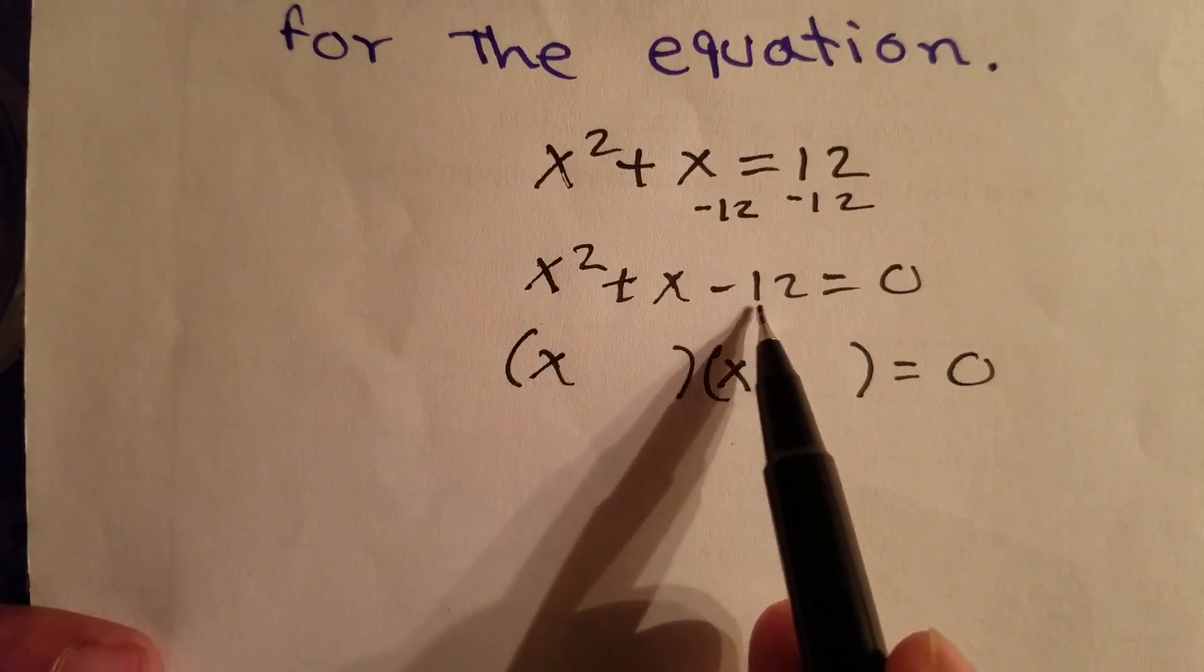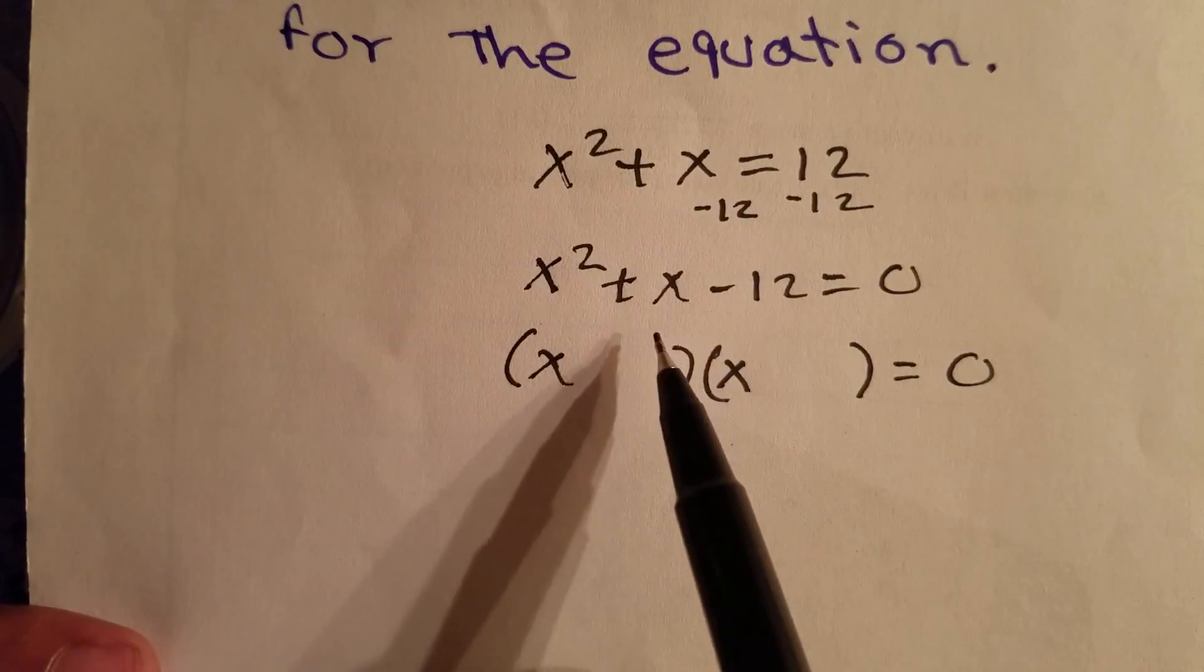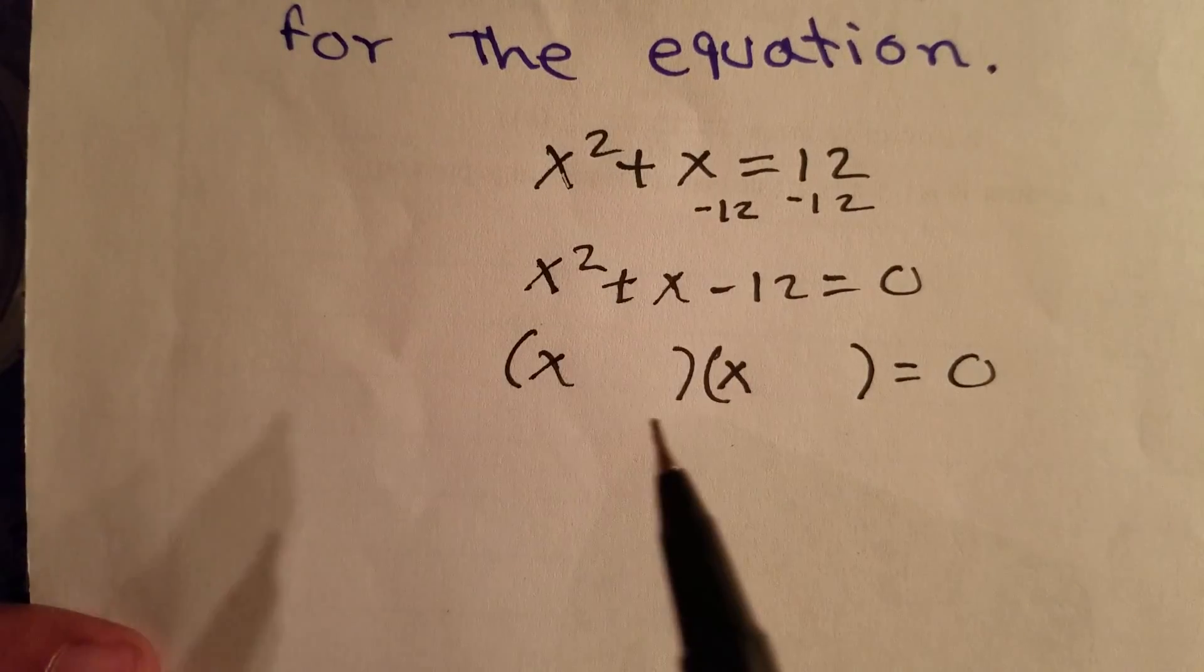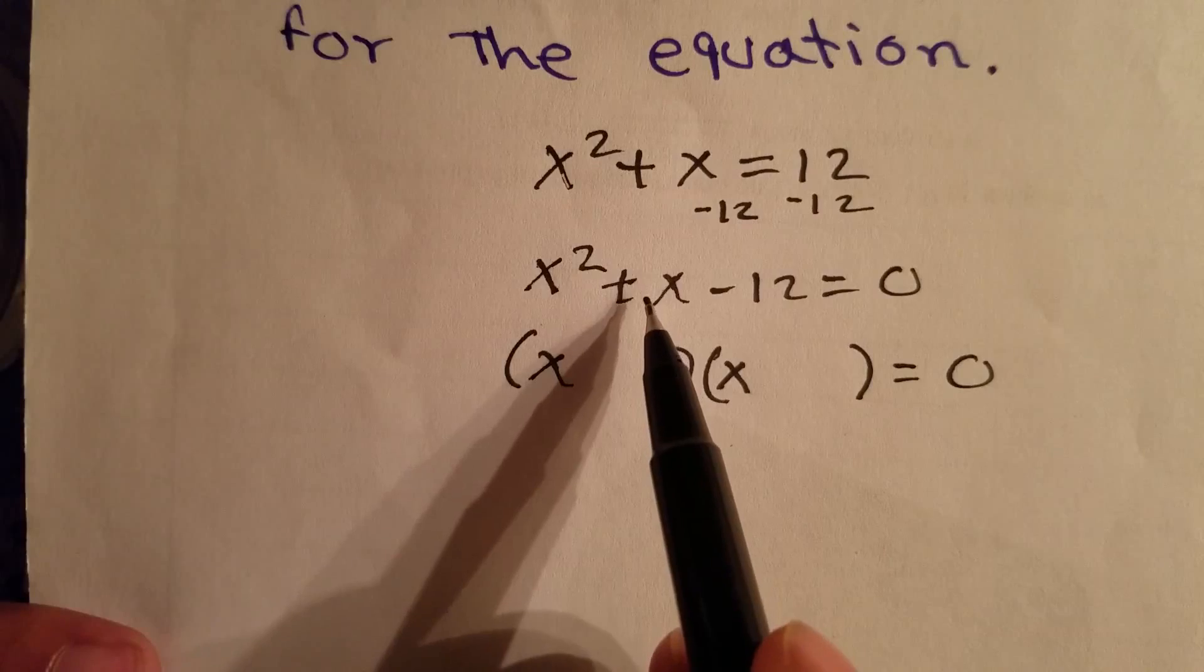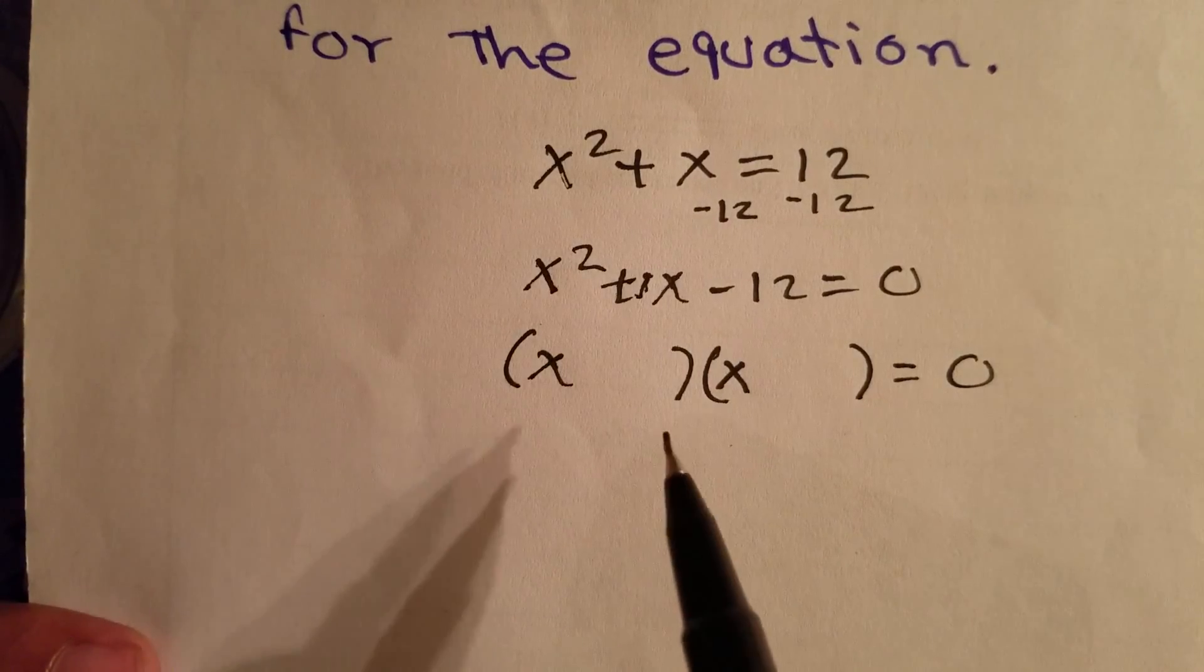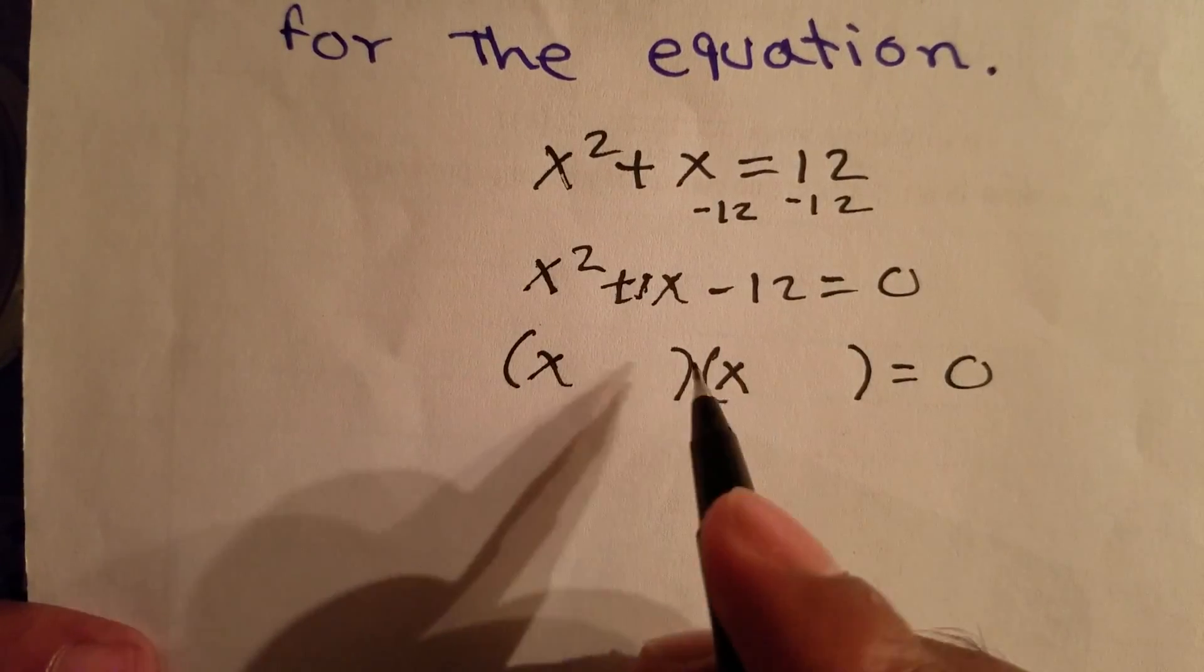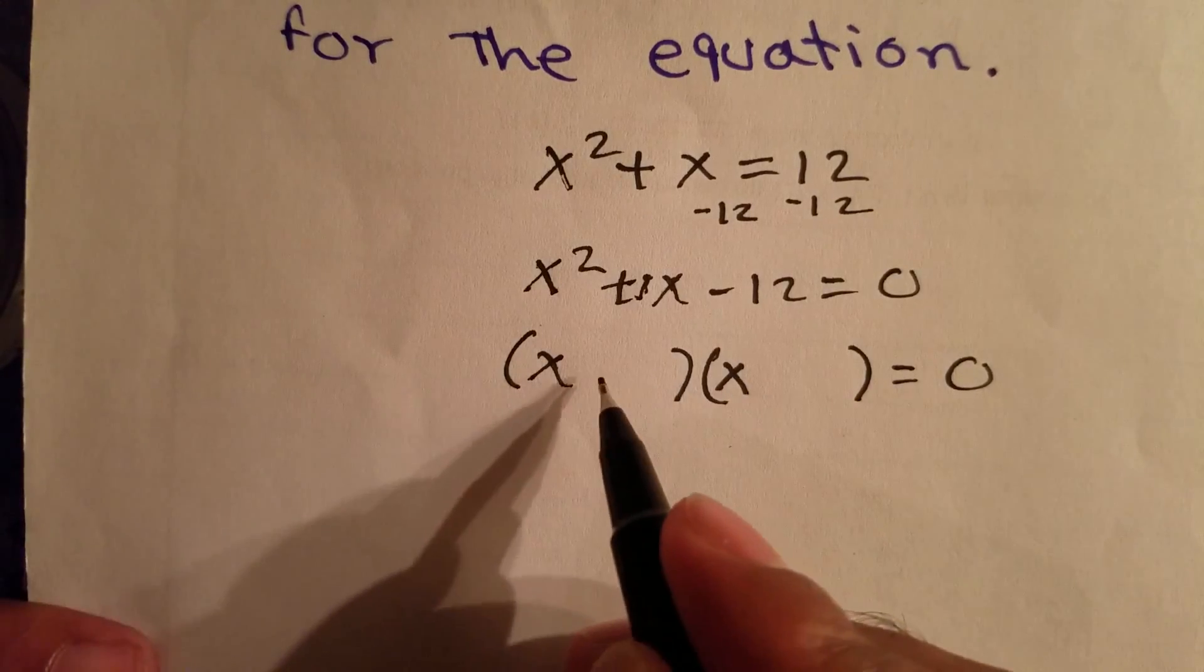We have to find out how many common factors we have for 12. Like 1 × 12 = 12, 2 × 6 = 12, and 3 × 4 = 12. But we need to know if we add and subtract, we're going to get this one right here, this 1x. So we know this is going to be 4 and 3, because 4 - 3 is just 1x.